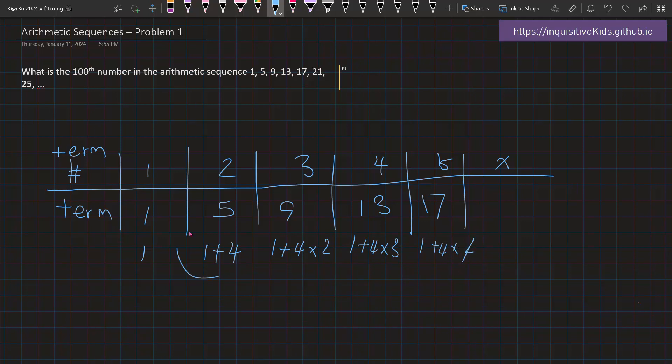By writing it out like this, we can really see the relationship that the term number has and its influence on the actual term itself. We see that here, this is 1 plus 4 times 1 plus 4 times 2, 1 plus 4 times 3, 1 plus 4 times 4.